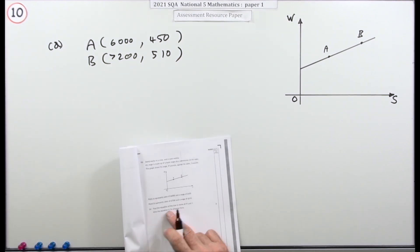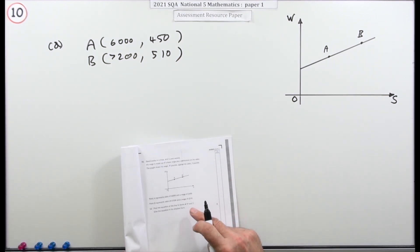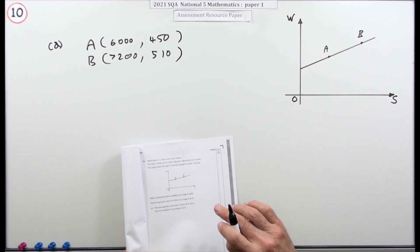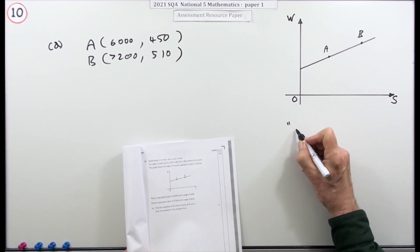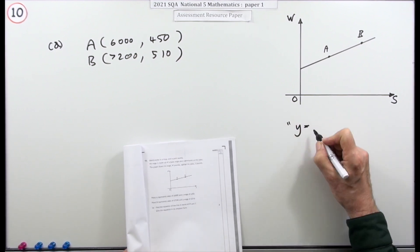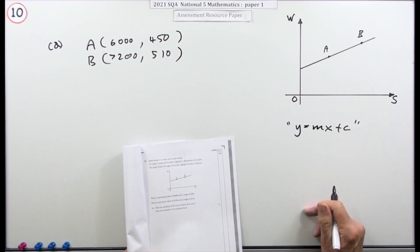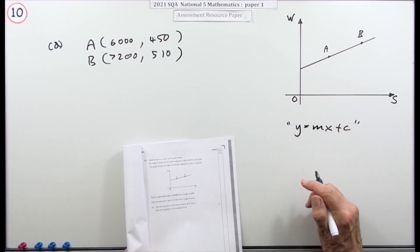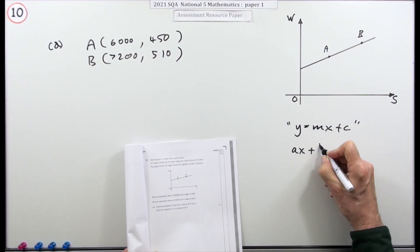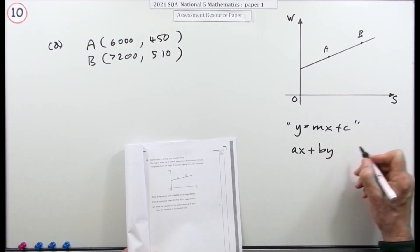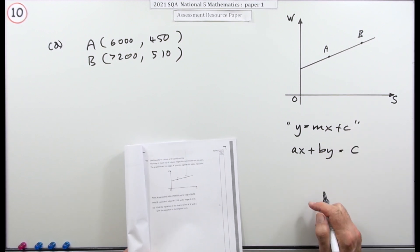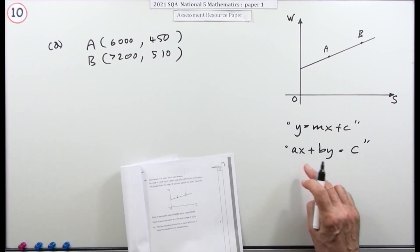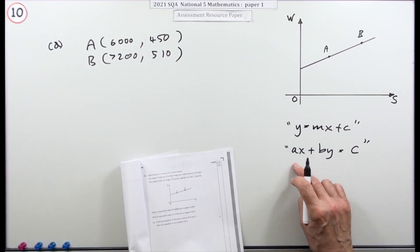The question says find the equation of this line in terms of w and s. It doesn't tell you how to express it, so there are various forms. The basic form is either y equals mx plus c — which has only two constants, important for simultaneous equations — or ax plus by plus c equals zero, or equal to c.